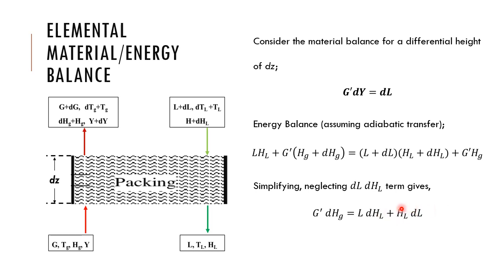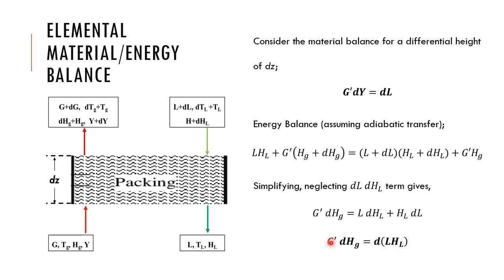Looking at the right-hand side of the energy balance equation, it has the form L·dHL plus HL·dL, which follows the product rule format: x·dy + y·dx = d(x·y). Applying this simplification, the elemental energy balance becomes d(L·HL) = G-dash·dHG. This is a very important equation that will be used throughout our design derivations for column parameters — make sure you write it down.